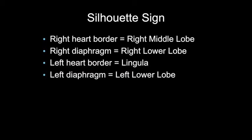The silhouette sign helps figure out which part of the lung the consolidation is in. If the right heart border is silhouetted, you're dealing with right middle lobe pathology. The right diaphragm silhouette indicates right lower lobe pathology. The left heart border indicates lingula involvement. And if the left diaphragm is silhouetted, the left lower lobe is involved.